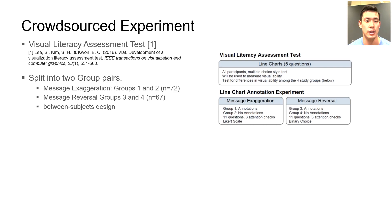Participants were split into two group pairs. Groups 1 and 2 tested for the difference of message exaggeration, and groups 3 and 4 tested for the difference of message reversal.